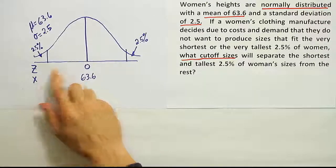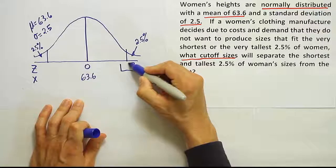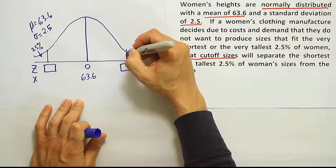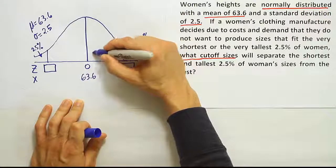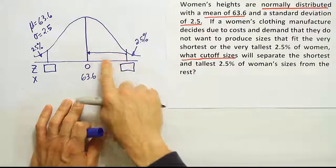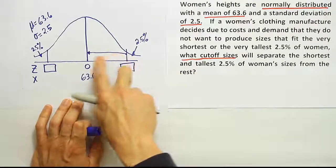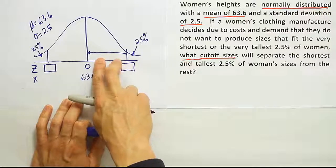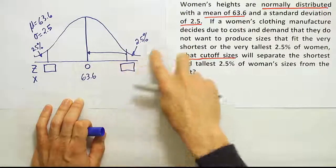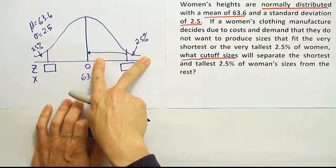We need to find the z-scores that correspond to those locations. Now in order to find the z-scores that correspond to those locations, we really have to consider the area that's represented by this line all the way over to the center. We want to know what that area is, because that's how our table reads. We can't look up 2.5% in our table. Our table works from the line to the center. So we have to know what area is here.